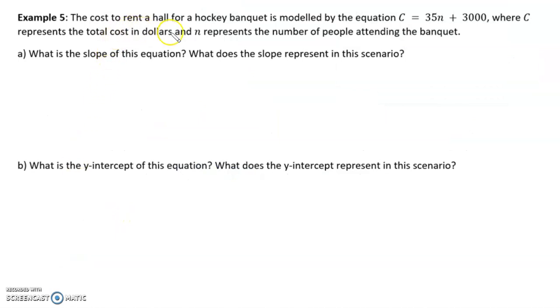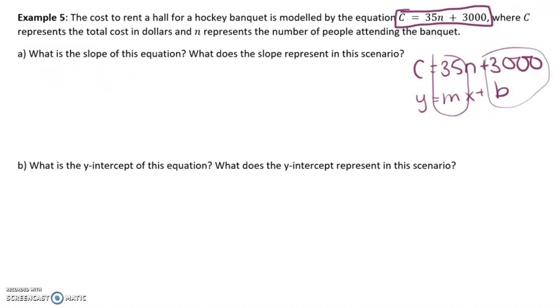Example 5, the cost to rent a hall for a hockey banquet is modeled by this equation, c equals 35n plus 3,000 where c represents the total cost in dollars and n represents the number of people attending the banquet. So, if you think about this in the form y equals mx plus b, we can see that the slope is 35 and the y-intercept is 3,000.